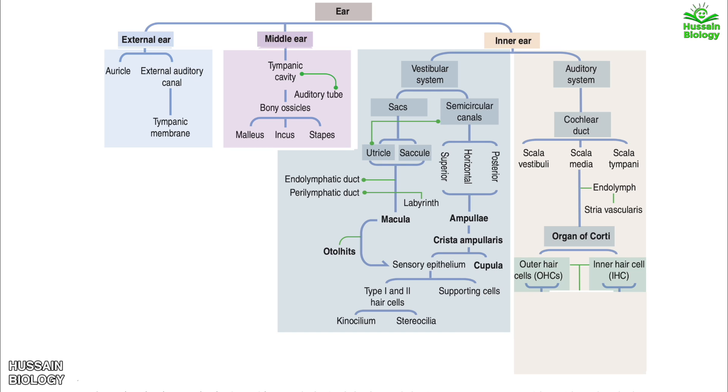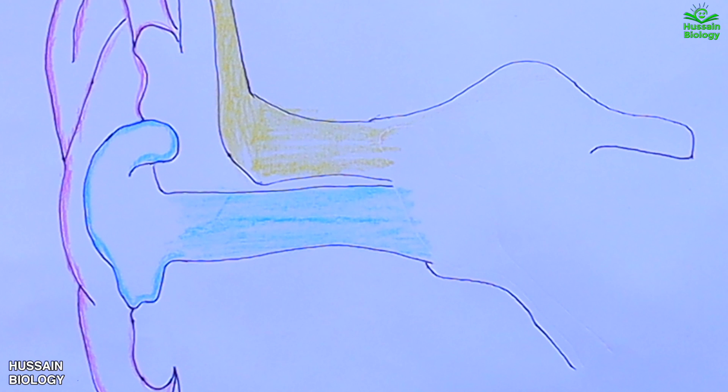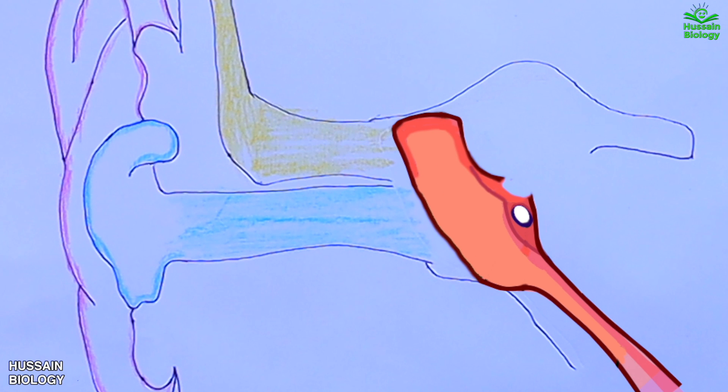Now let's have a brief outlook of the diagrammatic representation of ear anatomy and its basic working. First of all, we have the Eustachian tube, aka pharyngotympanic tube. This tube links the nasopharynx to the middle ear. Then we have the malleus bone, which is connected with the tympanic membrane on one side as shown in the diagram.